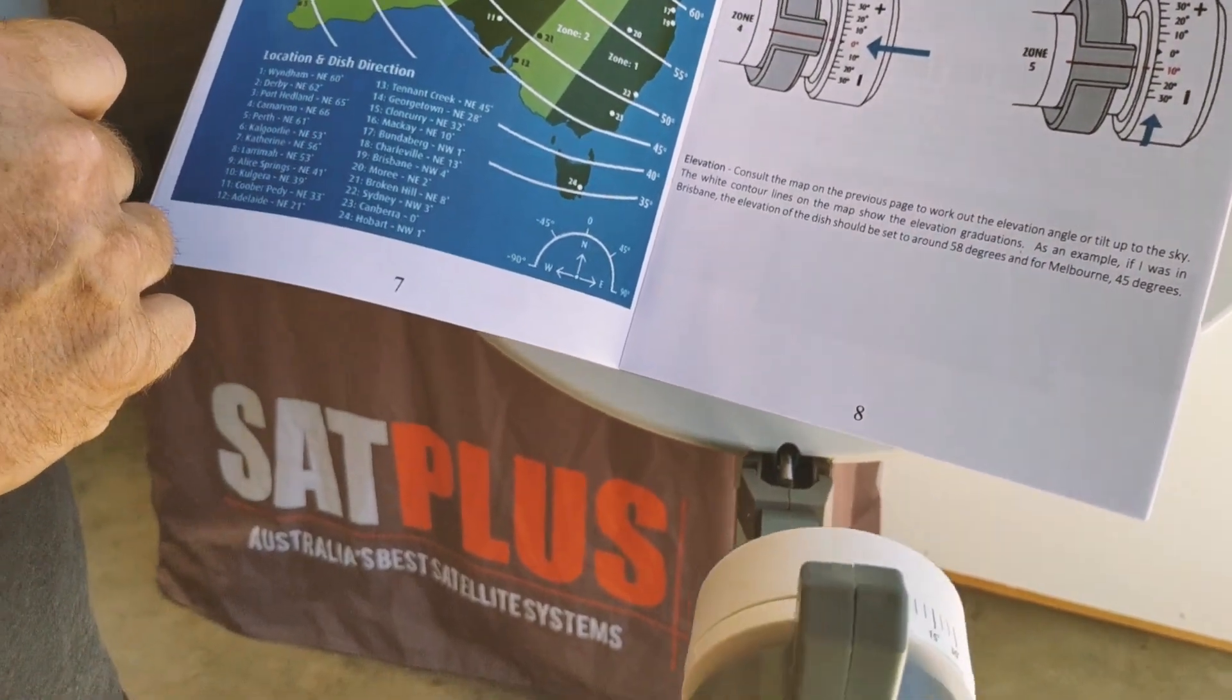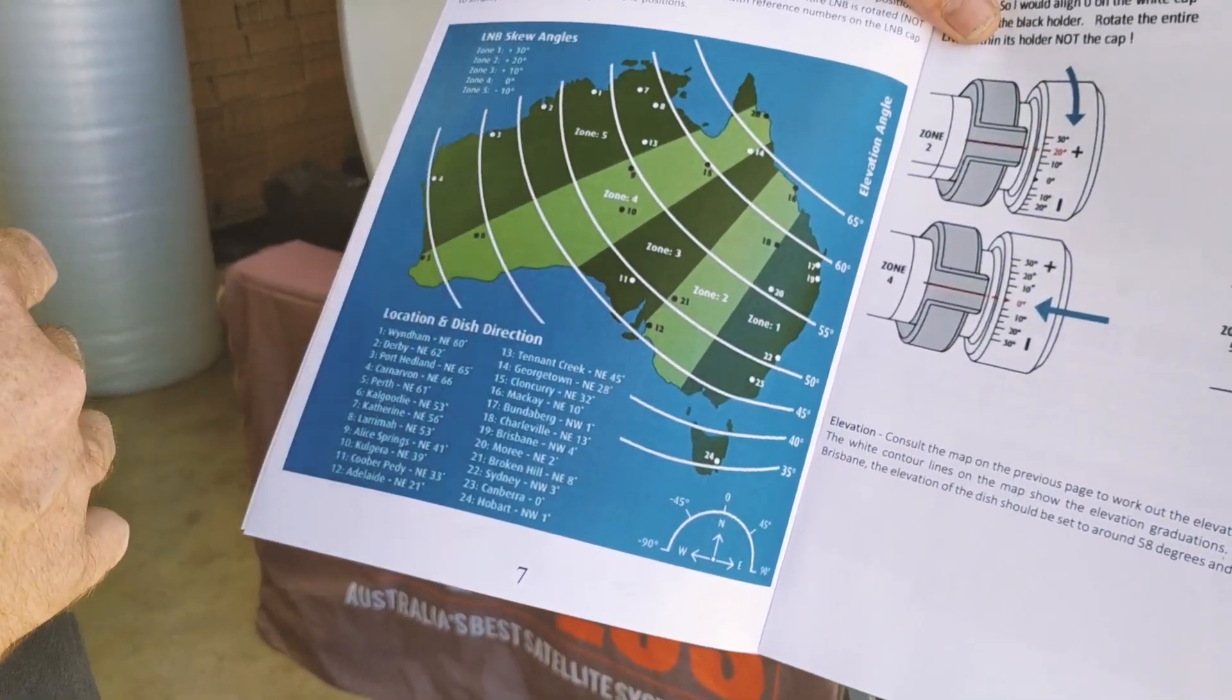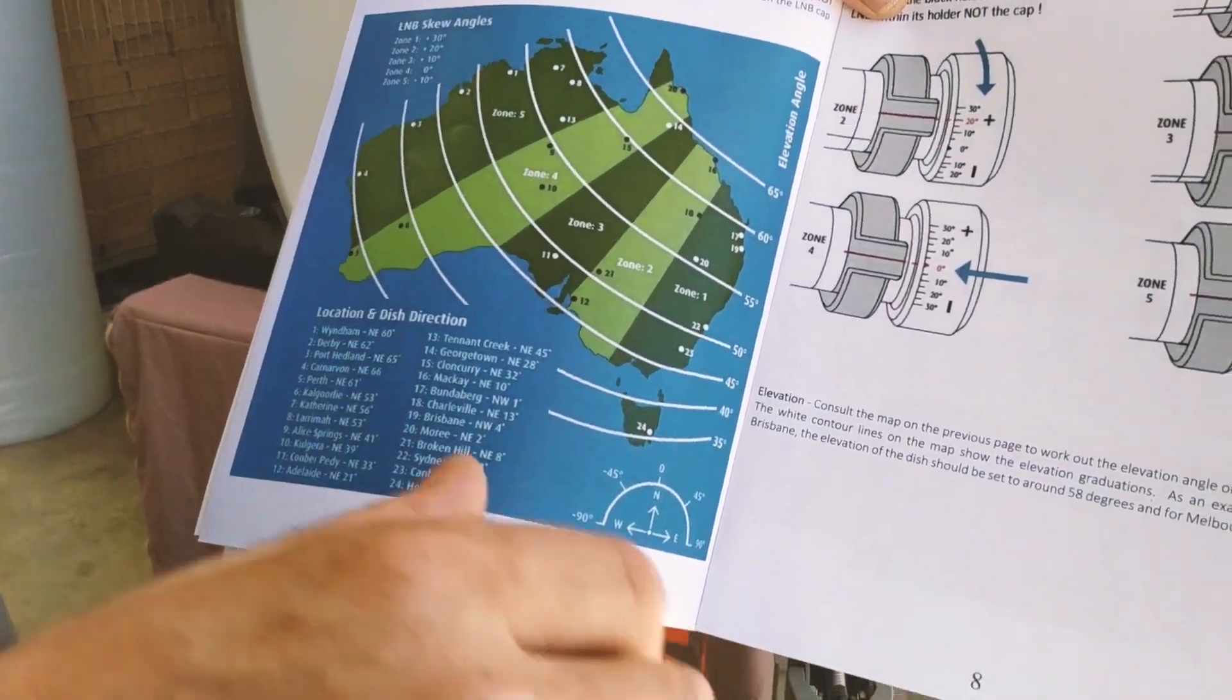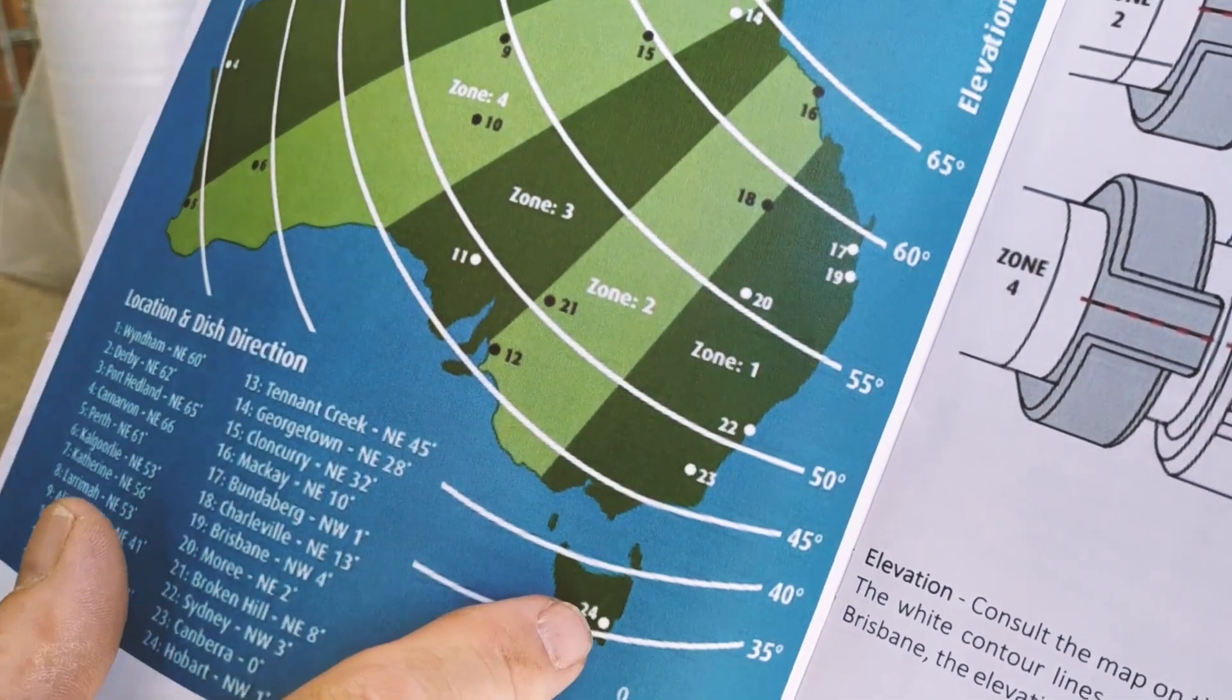Now it is important to have the LNB in the correct position. Otherwise you could spend all day moving the dish side to side and never acquire signal. So make sure you do this first. We're in zone one all the way from Tassie up to Gladstone.